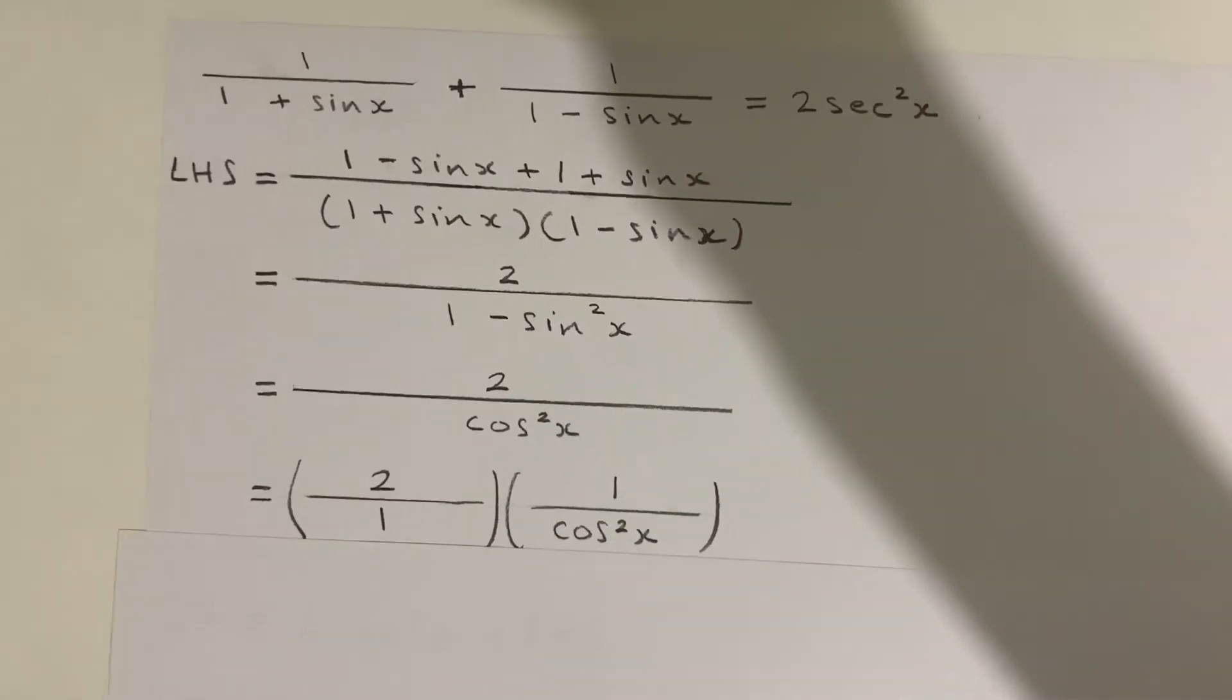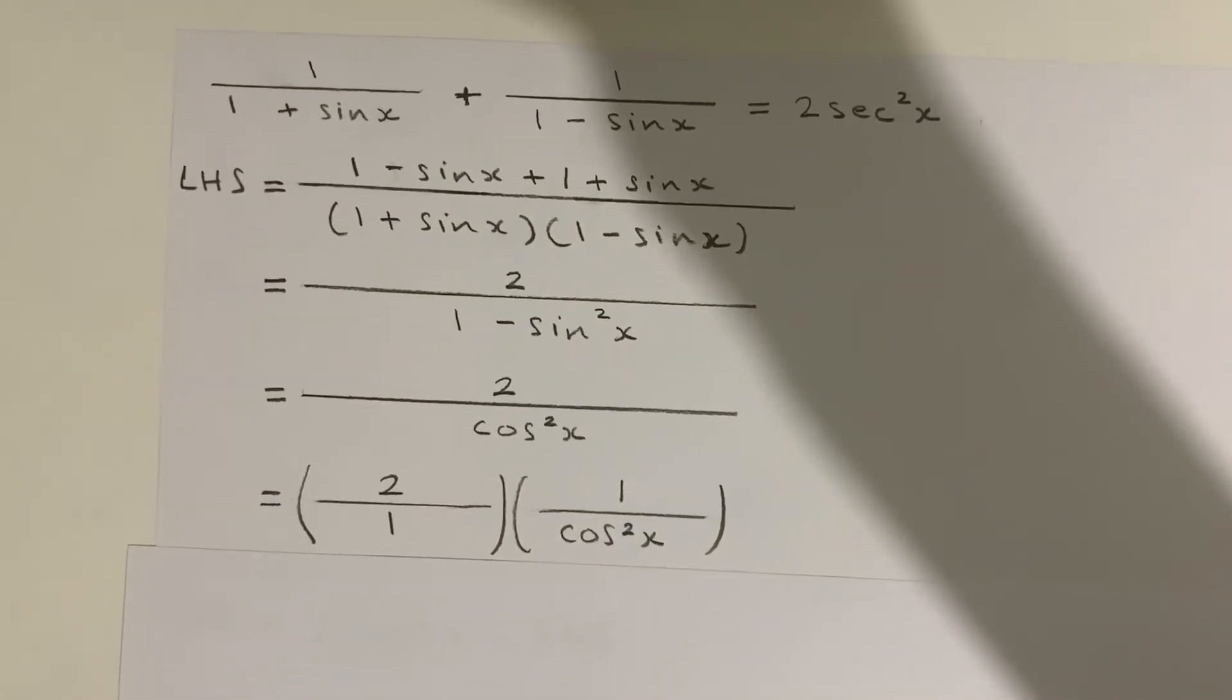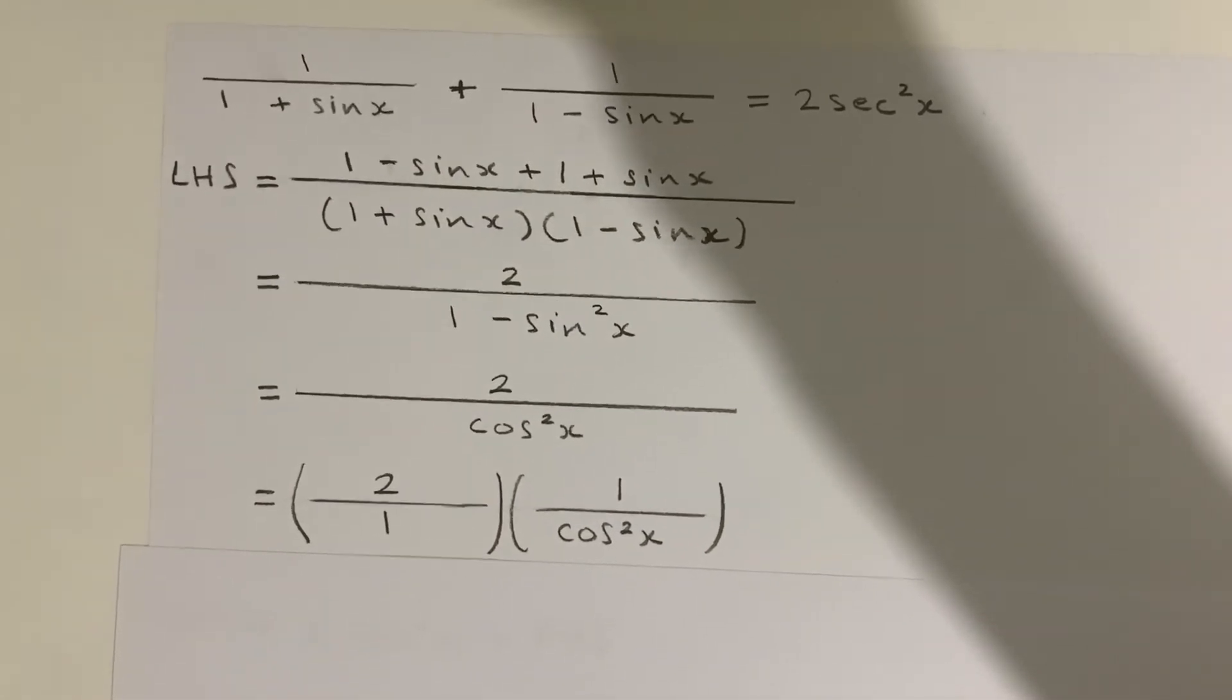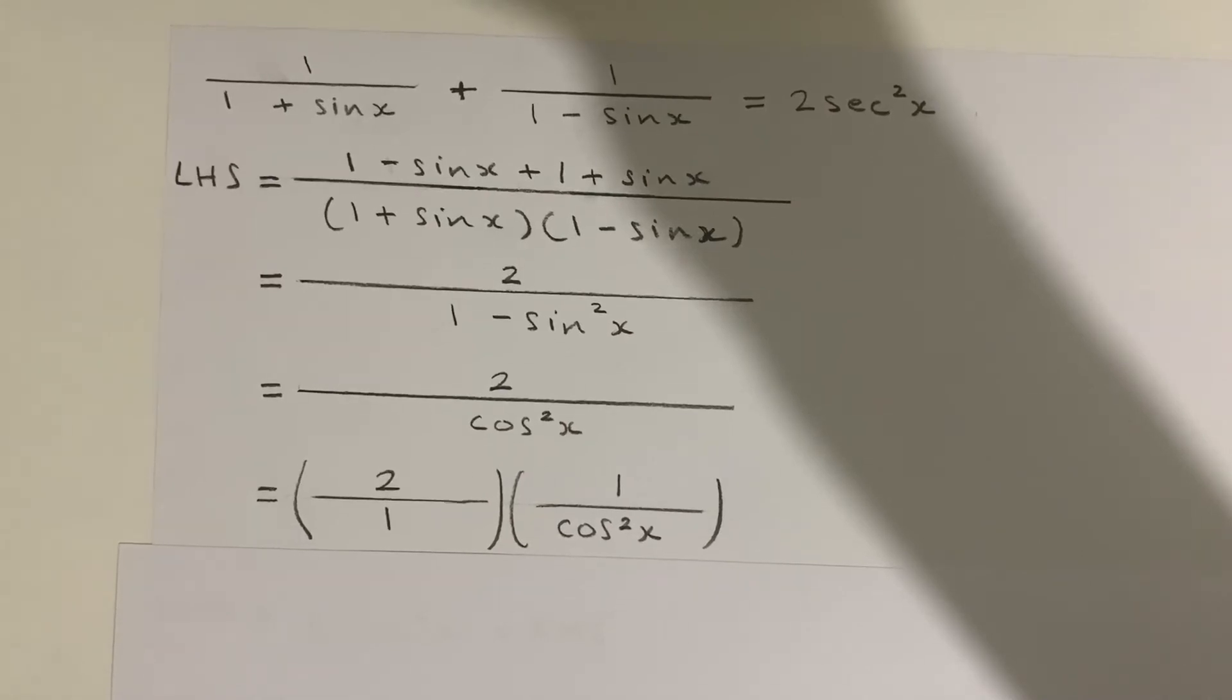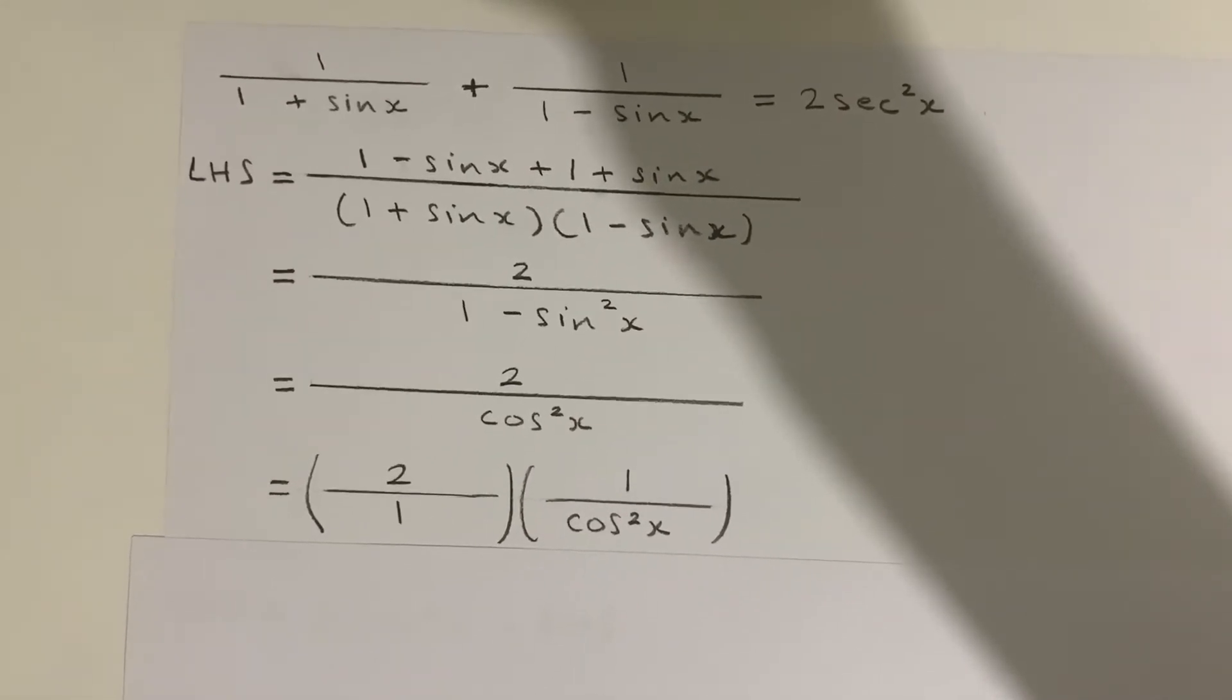And another way of writing that is just two multiplied by one over cos squared x. And one over cos squared x is just a secant squared x.